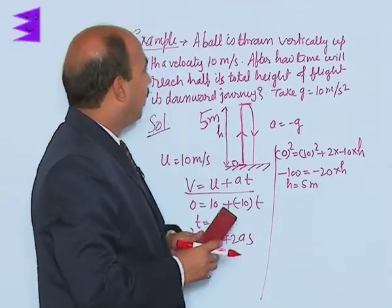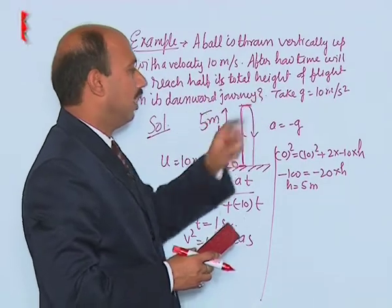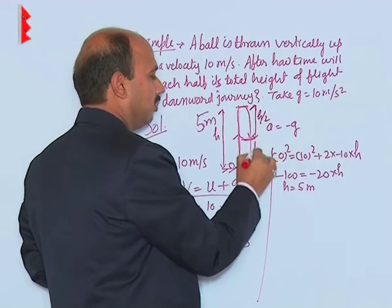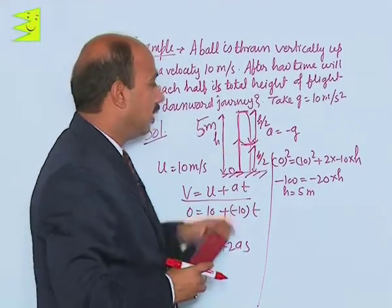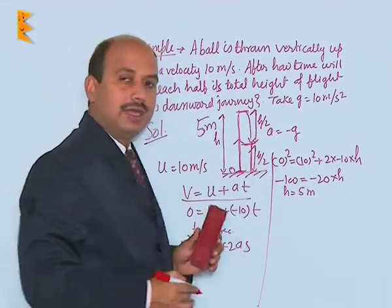Now what we have to calculate? After how much time will the body reach half its total height? Suppose I take somewhere here, this is h by 2 and this is also h by 2. How much time will it take? We have taken origin here so the displacement is only h by 2.